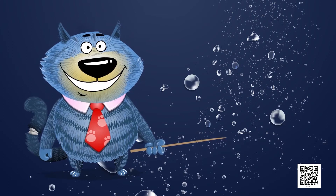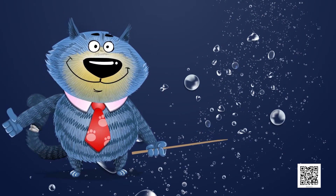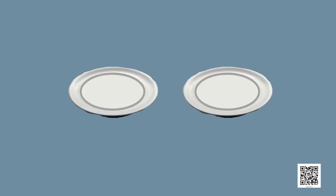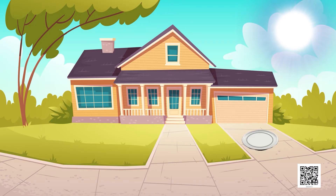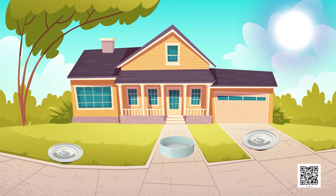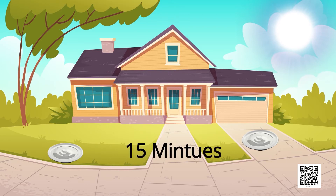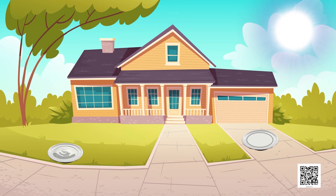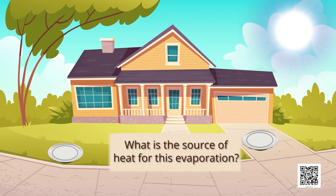But the water that we use is not salty. So from where do we get this water? To understand the water cycle, let us perform an activity. Take two similar plates. Place one in sunlight and keep the other under shade. Pour equal amounts of water in each plate. Observe the two plates after every 15 minutes. Does the water seem to disappear? From which plate does it disappear first? What is the source of heat for this evaporation?